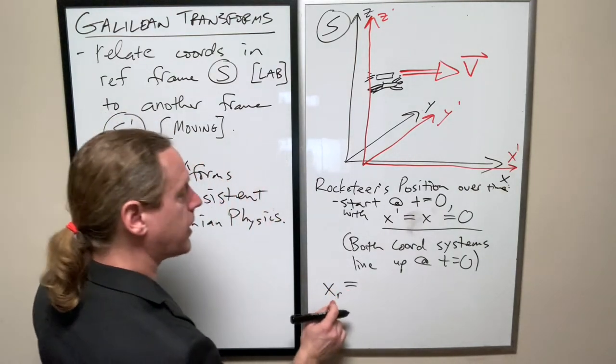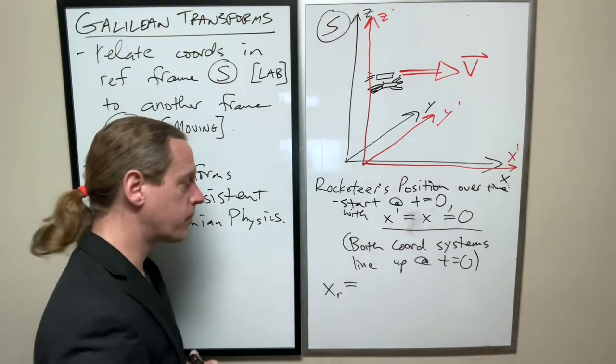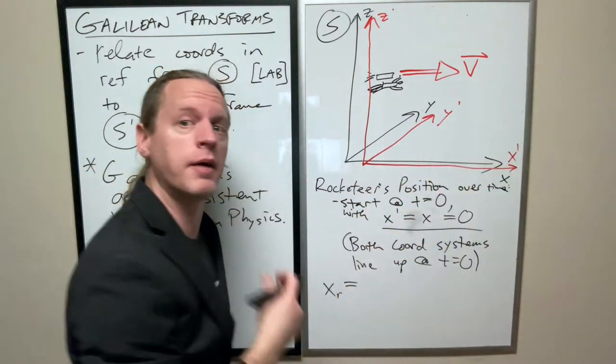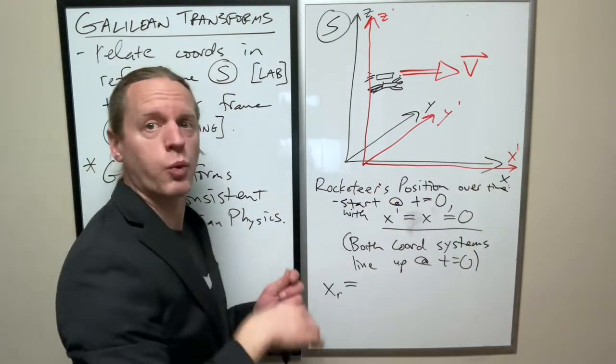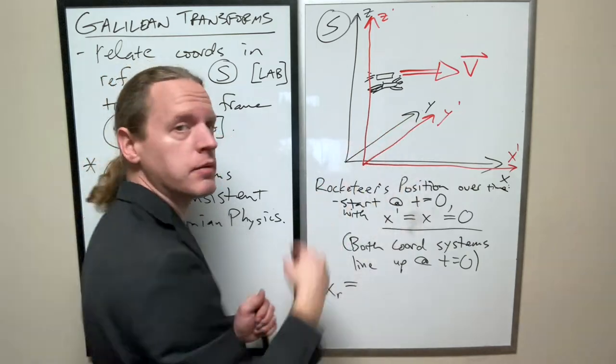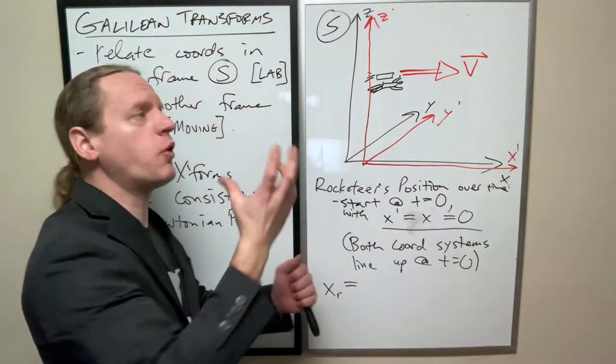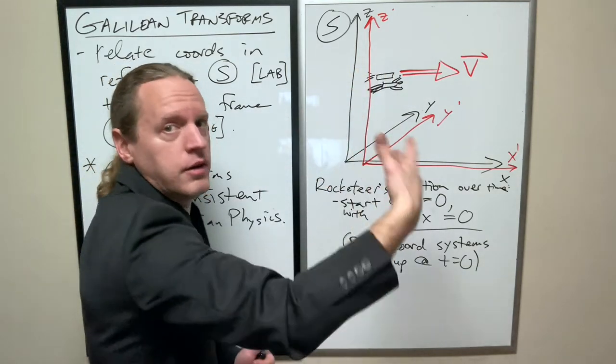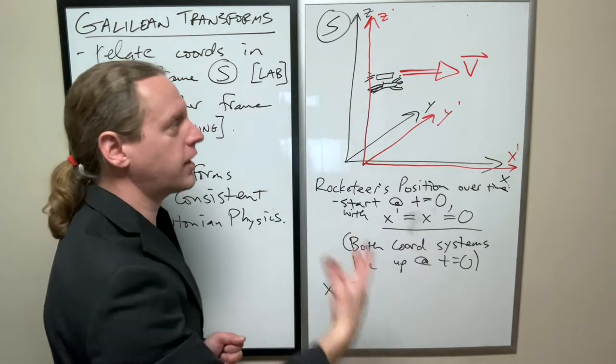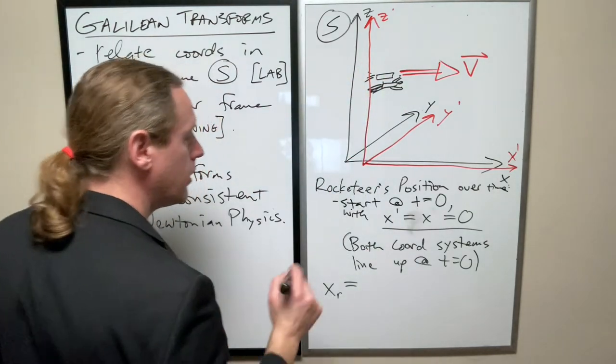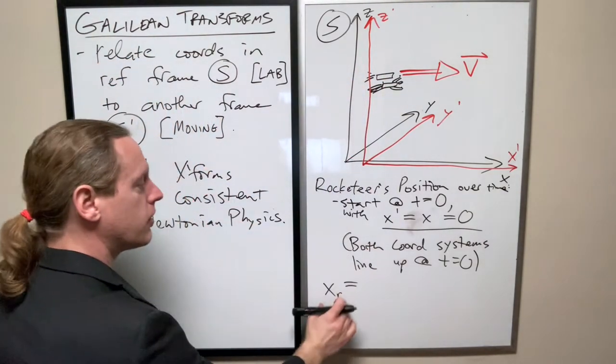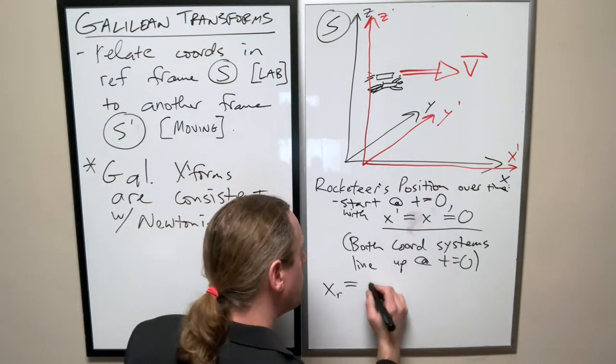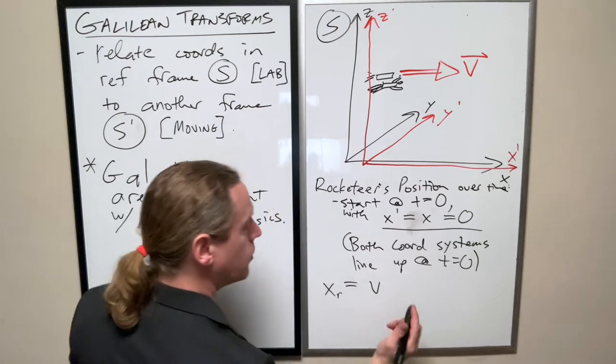Now we can parameterize his position as a function of time. The X position of the rocketeer over time changes how? As time goes by, it gets further and further. If he's going 10 meters per second, after one second he's 10 meters away. The rocketeer's position viewed in the unprimed frame will increase according to his velocity times time.